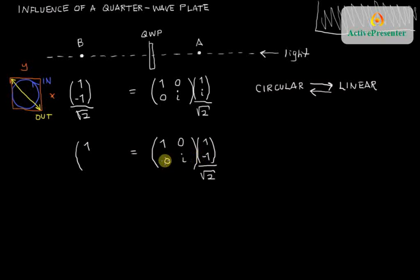And in the bottom, the Y component, 0 times 1 plus i times -1. That's -i. Still over root 2, properly normalized. Let's look at what that looks like. Again, if we consider a front-on view in XY space.